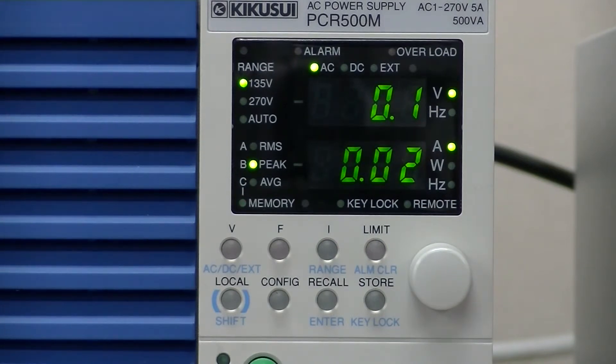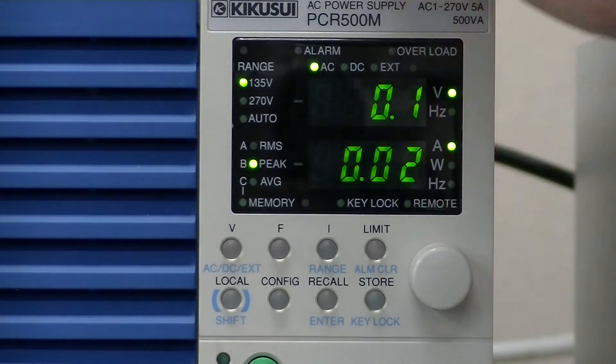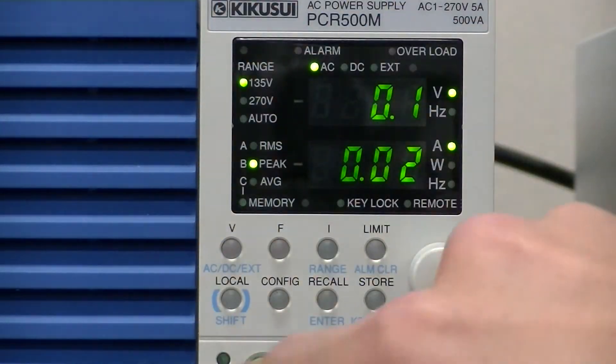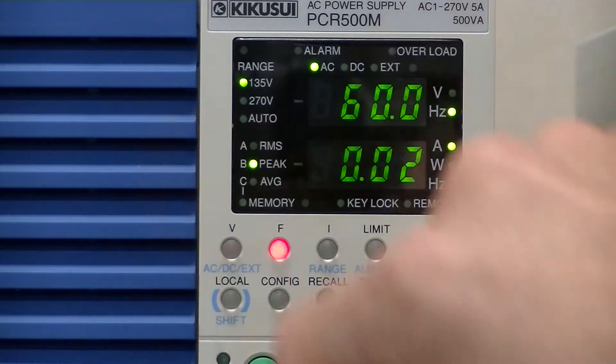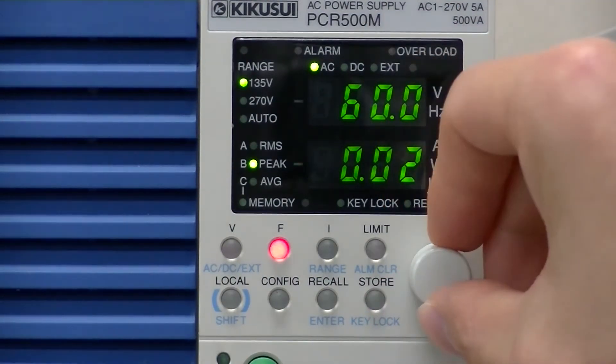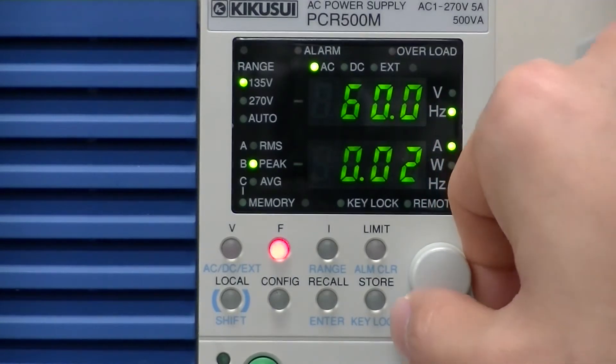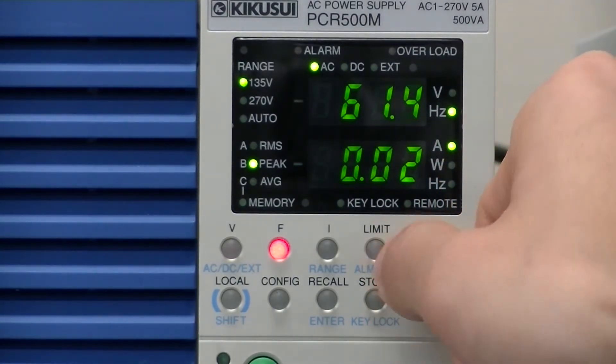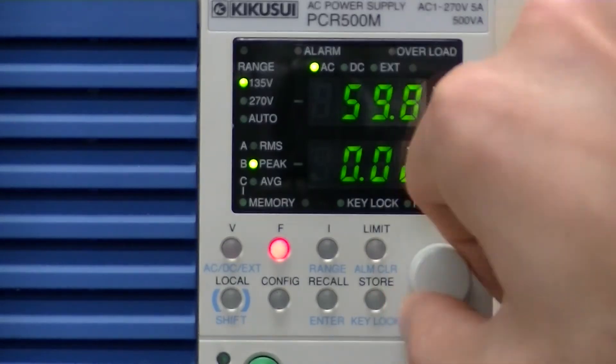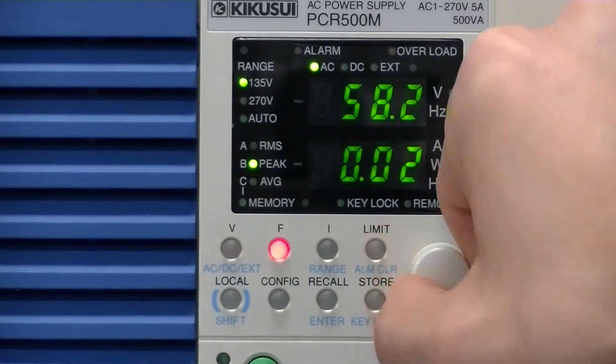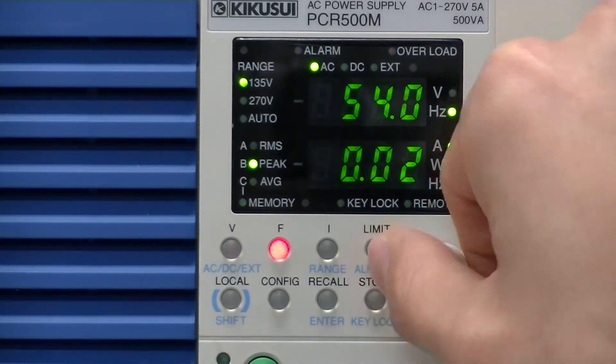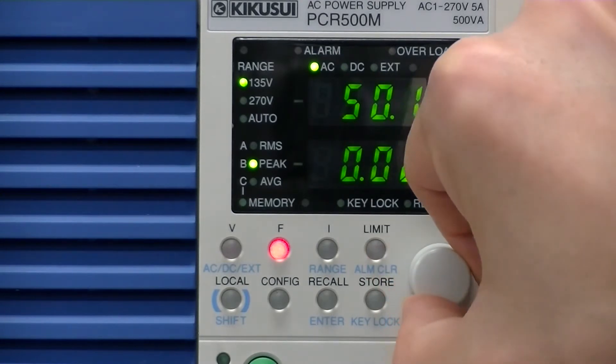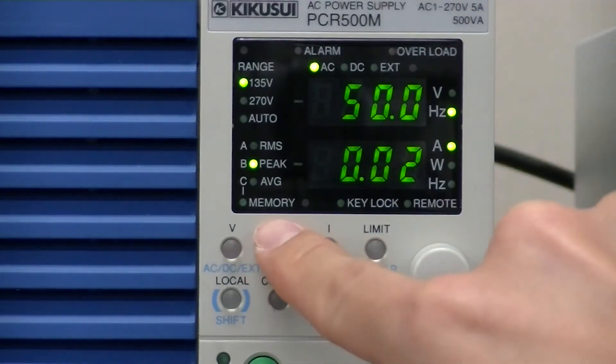Next, let's set the frequency of the output by pressing F button. You can set it the same as the voltage. Let's set it to 50 Hz. Press F again to finish.